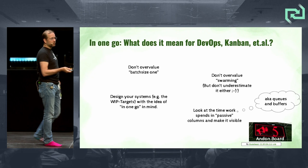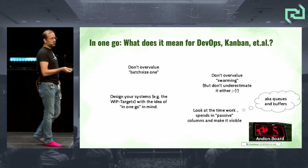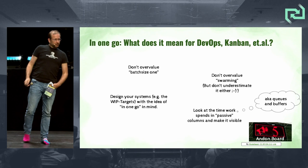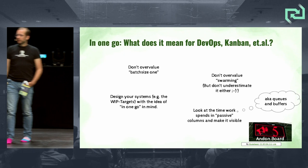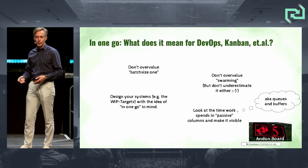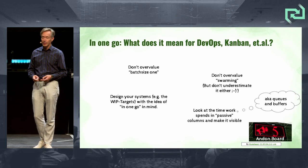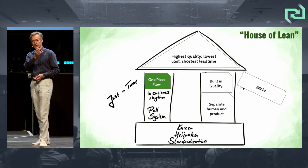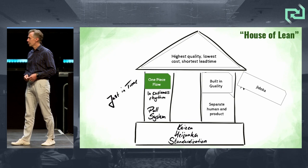One of the most interesting things is looking at passive columns — where is the idle time of the work in your systems? A lot of you probably have boards with columns called something like 'ready for' or 'done' in the middle of the board. Those are the stops on the slide. It's probably a good idea to visualize them and count how many things are there, to enable flow in one go for each piece of work.